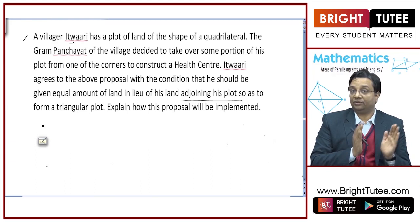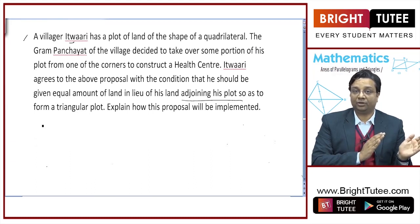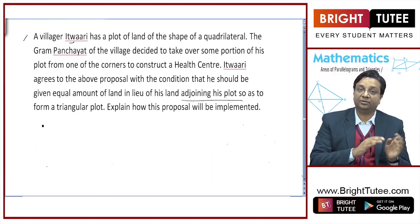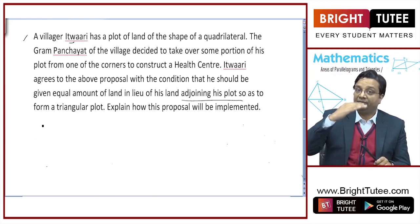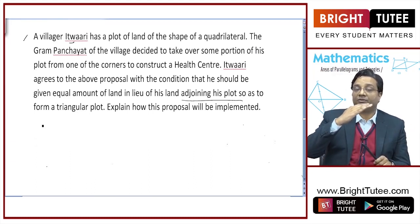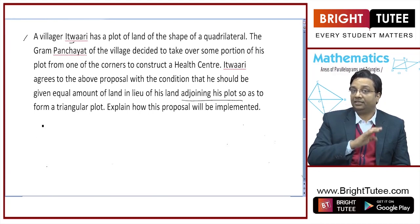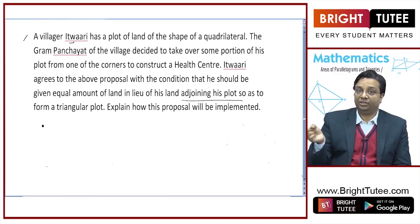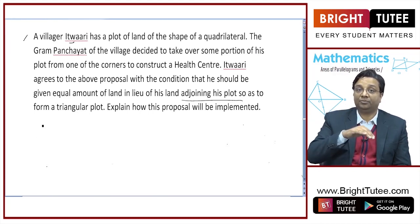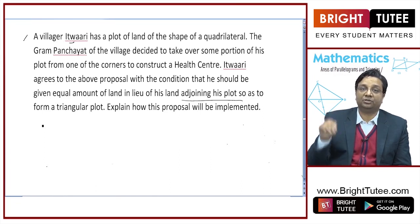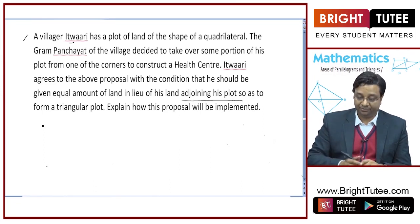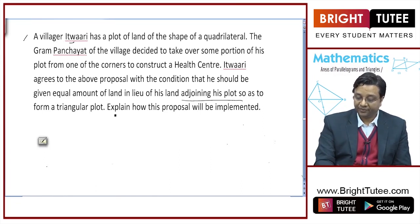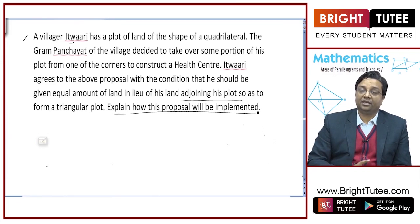He had got a quadrilateral shape plot. Now, if one corner of his land is cut, then he wants that an adjoining plot is given so that his plot now becomes of triangular shape. Explain how this would be implemented.